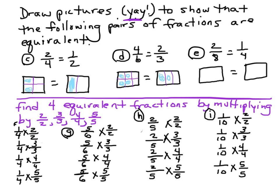And now let's take a look at the next one: two eighths equals one fourth. So we're going to divide this into fourths and now into eighths, and we're going to divide this one into fourths. One, two — same deal. You see that if I were to go like this, I'd still have my two eighths.